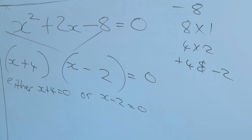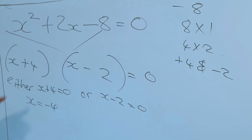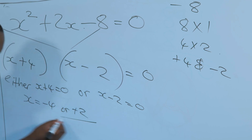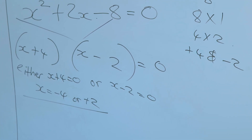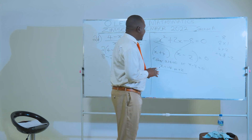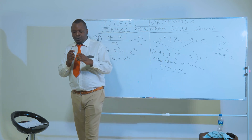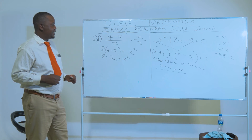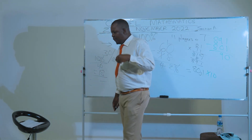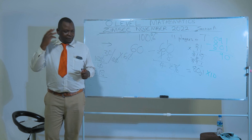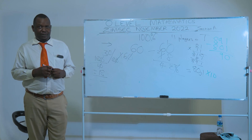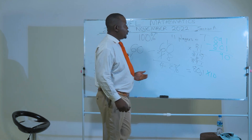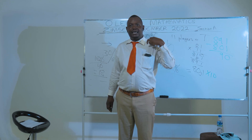So X equals minus 4 or X equals plus 2. Remember with quadratic equations you get two values of X. For this effort on question 2D, we are handsomely rewarded with four marks by the Zimbabwe School's Examinations Council. I hope you are comprehending, and I hope this information is infiltrating your cerebral hemispheres without much difficulty. This has been question two. In the next video, we are going to move on to the third question.